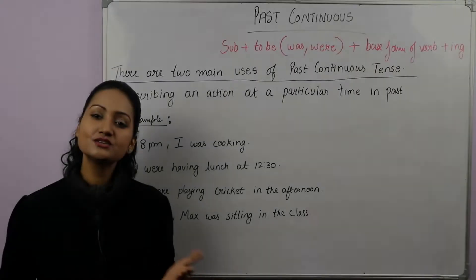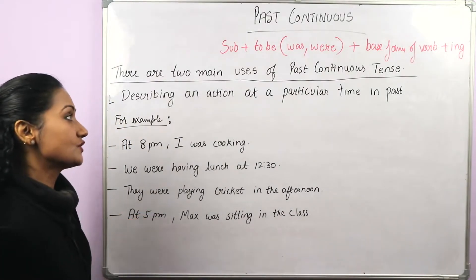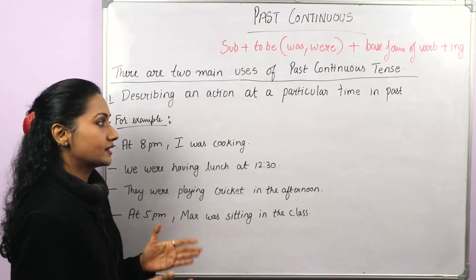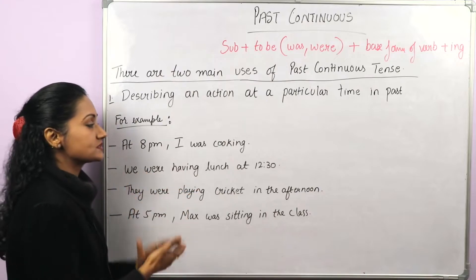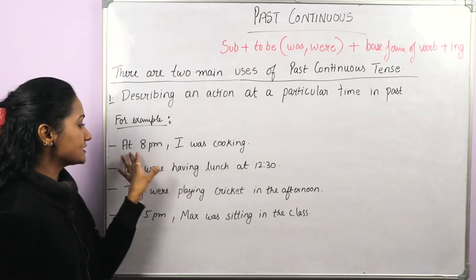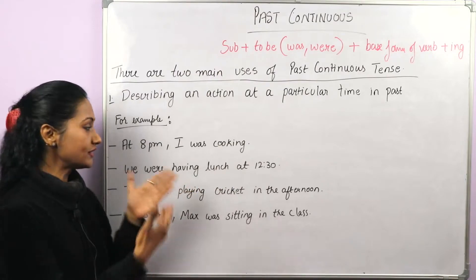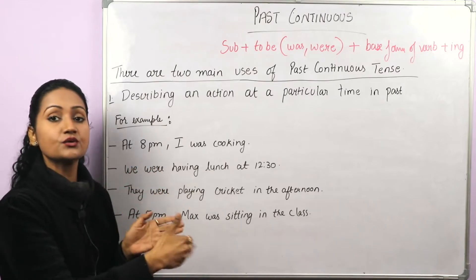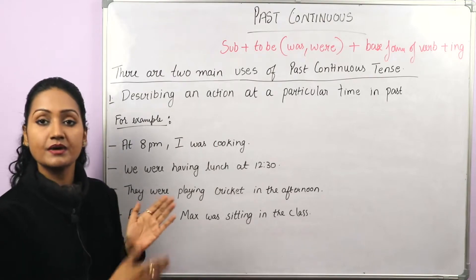When do we use past continuous tense? There are two main uses. Number one: describing an action at a particular time in the past. For example, 'At 8 p.m. I was cooking.' The action of cooking started before 8 p.m. and continued till 8 p.m. — it was still going on; it didn't end. That's why we used past continuous.